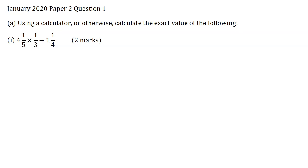You can use a calculator to do this using the a b/c function on the calculator, but I am going to work this out the long way. The first thing I am going to do here is to convert this to an improper fraction. 4 multiplied by 5 here is 20. 20 plus 1 is 21 over 5 multiplied by 1 third minus 1 multiplied by 4 is 4. 4 plus 1 is 5 over 4.